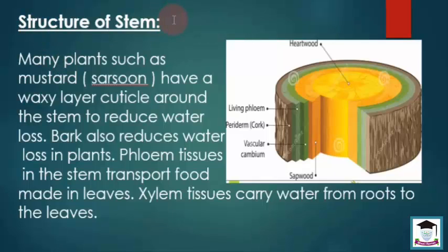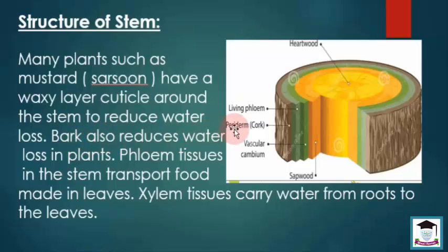Structure of stem — tane ka structure. Many plants such as mustard (sarson) have a wax layer cuticle around their stem to reduce water loss. Sarson ke pode mein tane ke andar cream-sa ek liquid hota hai jise cuticle kehte hain; iska kaam paani ke ikhraaj ko rokna hai. Bark also reduces water loss in plants.